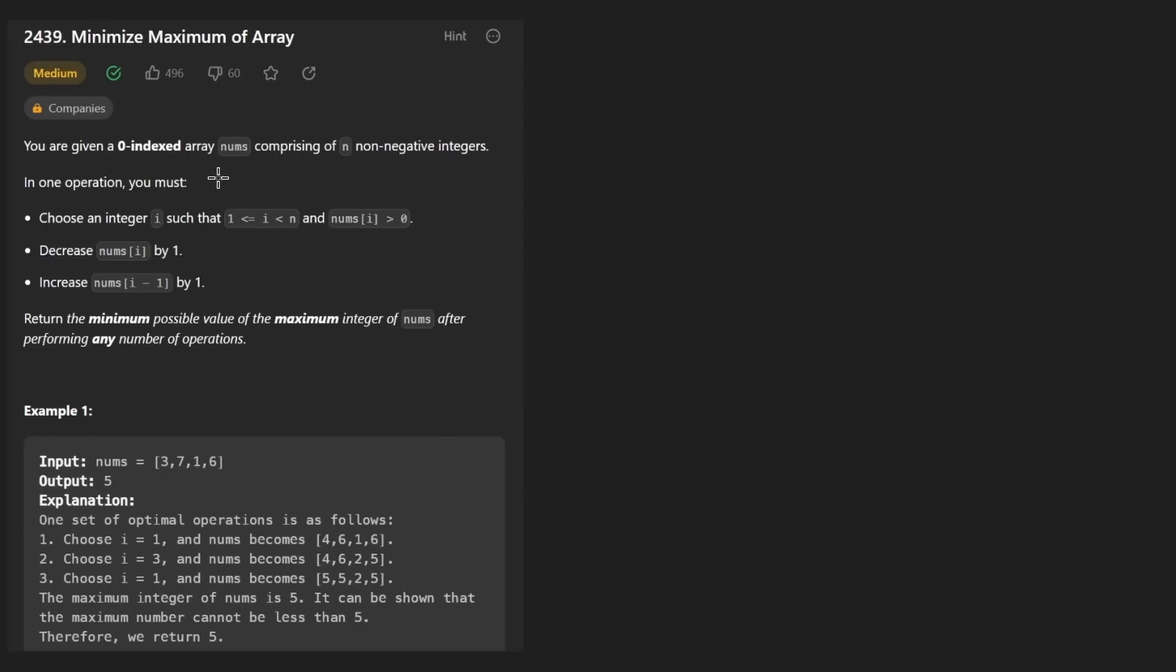The way they describe this problem is that there are like a few operations that we can do. I'll go through these, but then I'll kind of explain a better way to think about this problem, like a more simple way. So I'll just use the same example that they do in this problem. What we can do is choose any integer except the leftmost one, and you'll see why in just a second. So among any of these integers, we are going to pick one of them.